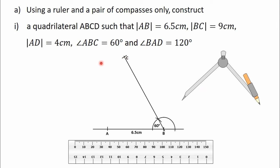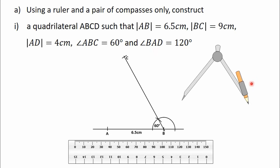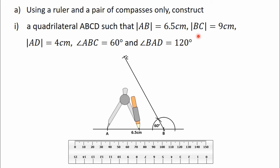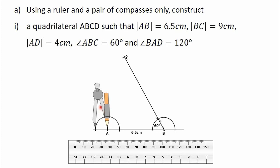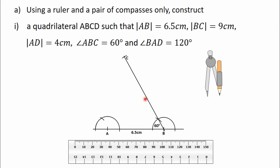Now let's move on to the other angle. Angle BAD is 120 degrees, so we are going to construct a 120 degree angle on point A. Move the needle of the compass to point A, adjust it, then turn it and construct a semicircle on line AB using point A as the center. With the same radius, move the needle to the intersection point, turn it and construct an arc to intersect the semicircle. Draw a straight line joining the point of intersection of the arc and the semicircle to point A. The angle formed at point A is 120 degrees.